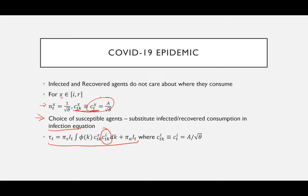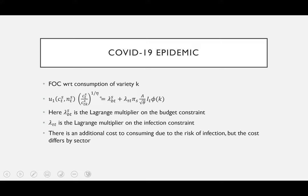After taking the first-order condition with respect to consumption of variety k, which is phi(k), we get: U_1(C_S_t, N_S_t) times (C_S_t / C_S_t(k))^(1/eta) equals Lambda_S_B_t plus Lambda times tau_t times pi_t_A over pi times one over square root of theta times I_t times phi(k). Here, the first term is the Lagrange multiplier on the budget constraint, and the second term is the Lagrange multiplier on the infection constraint. The idea is that for consumption, there is an additional cost due to the risk of infection, and this cost differs according to the sector they choose to consume in.